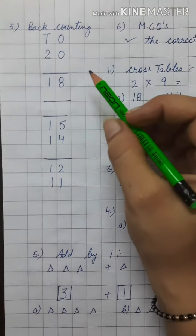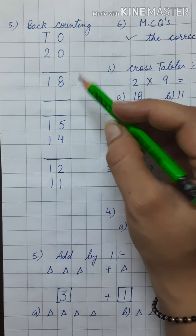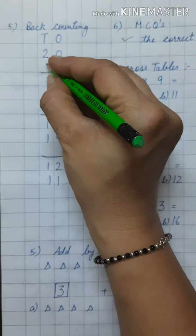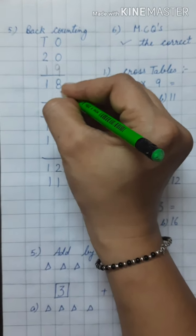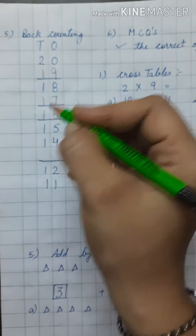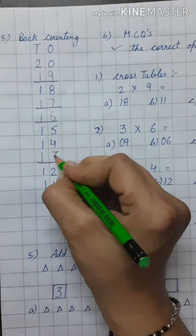Now, in next question, you have to complete this back counting. What will you write before 20? 19, 18, 17, 16, 15, 14, 13.